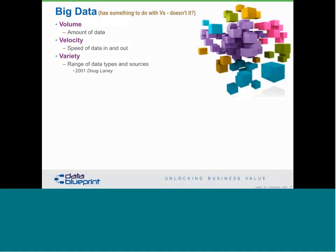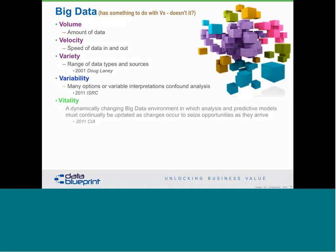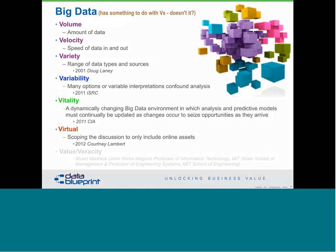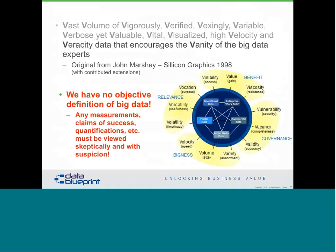When we started to catalog these things, there's Doug's pieces right up there for the starters. Doug has a cool new book coming out on information economics. We found some other definitions out there of variability, vitality, virtual, and value and veracity. In fact, if you really look hard, there are 13 big Vs of big data. We know right away that if everything starts with the letter V, the marketing people are involved, because there's no way that would happen by accident.